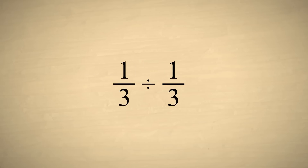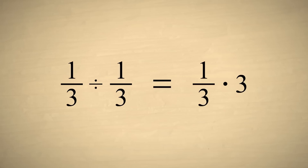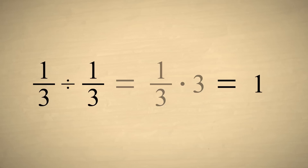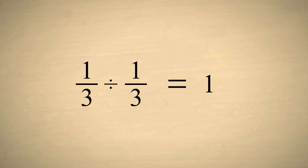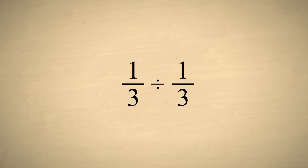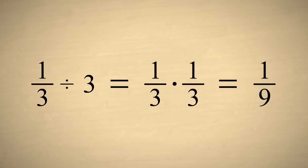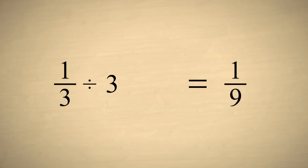Now let's try dividing one-third by one-third. Instead of dividing by one-third, we can multiply by its reciprocal, three. One-third times three is three-thirds, which is equal to one. Of course, it makes sense that one-third divided by one-third is equal to one, since anything divided by itself is one. Let's try one more example: dividing one-third by three. This is the same as multiplying one-third times the reciprocal of three, or one-third times one-third. Multiplying the numerators and denominators, we get one-ninth. So one-third divided by three is one-ninth.